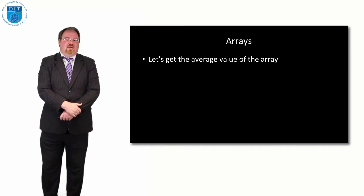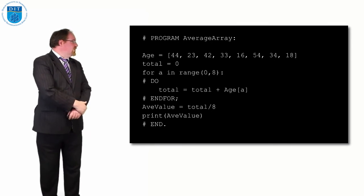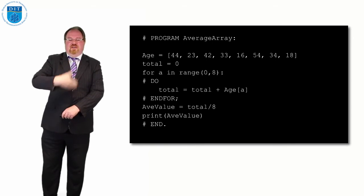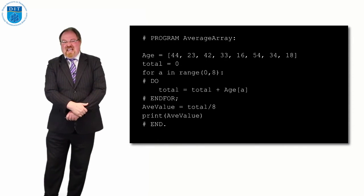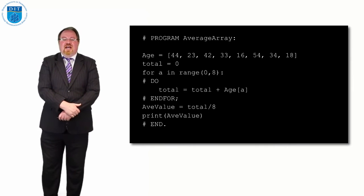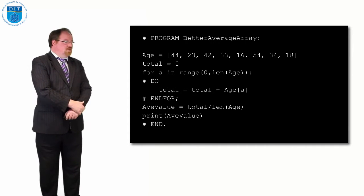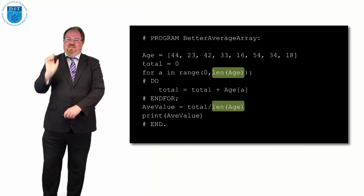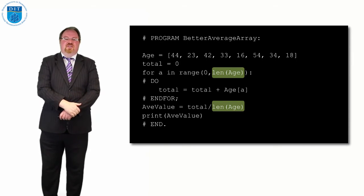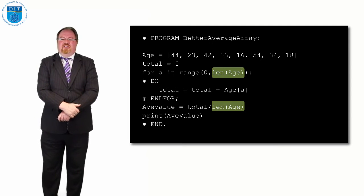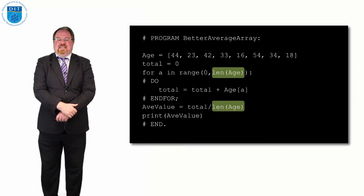To get the average value, loop through the array with a running counter called total starting at zero. Each value is added to total around the loop, and at the end the average is total divided by 8 — the length of the array — then print that average. Even better, Python has a built-in len() function: len(age) automatically figures out how long the array is, so if you add 10 more values making it 18 elements, len(age) figures out it's 18 instead of 8.